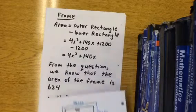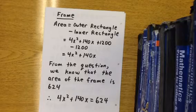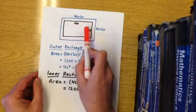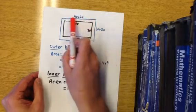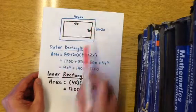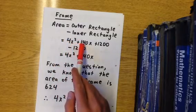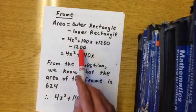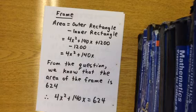We know that the frame is going to be equal to the outer rectangle minus the inner rectangle. The frame is everything along the outside. If we calculate this bigger rectangle and subtract this smaller rectangle, we'd have the area of just the frame. The area of the frame is 4x squared plus 140x.